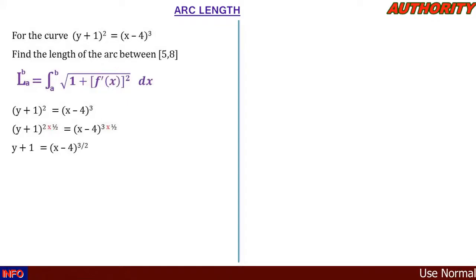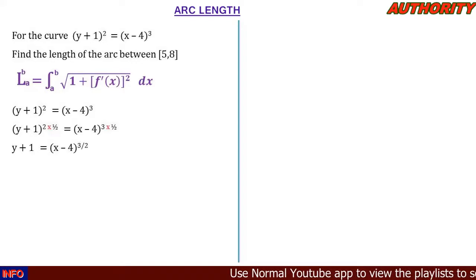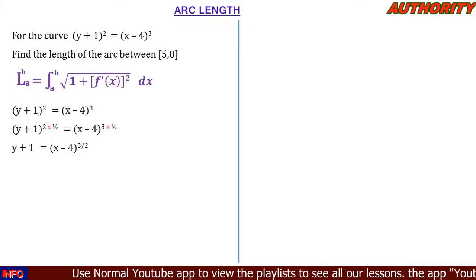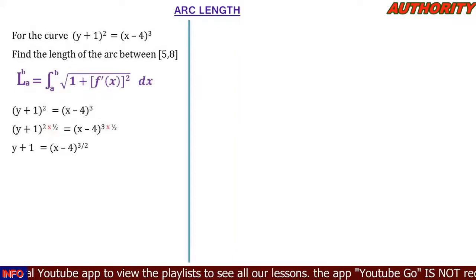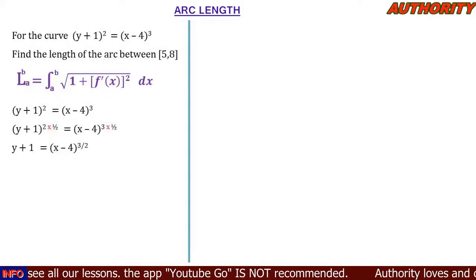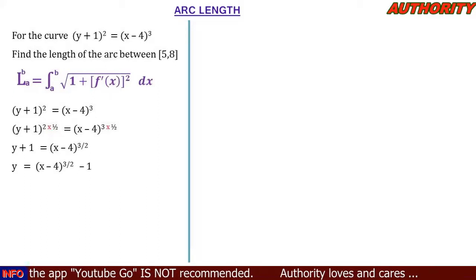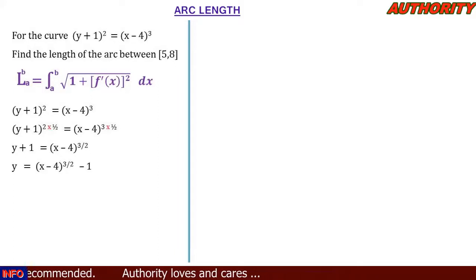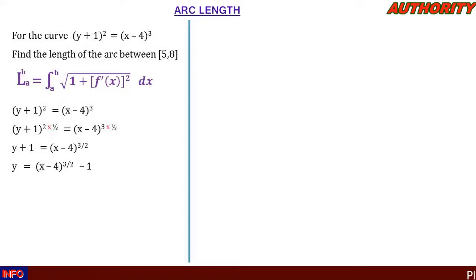On the right side, (x-4)³ raised to the power 1/2 gives (x-4)^(3/2). Taking 1 to the other side, we get y = (x-4)^(3/2) - 1. This is our function f(x), so f(x) = (x-4)^(3/2) - 1.